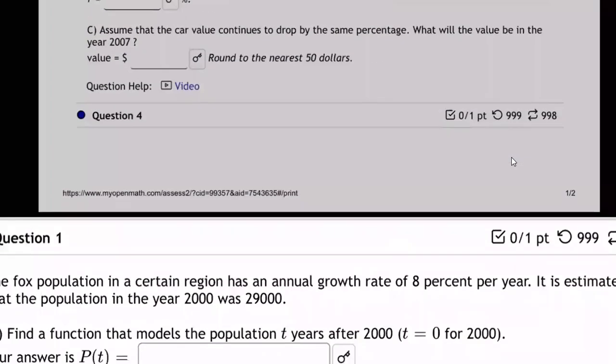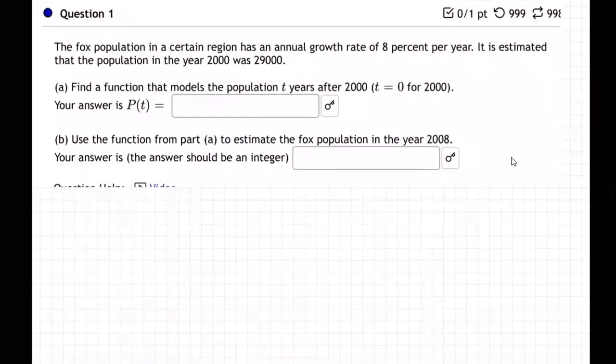Okay, so let me come on down here. Here we go. Here's the question. The fox population in a certain region has an annual growth rate of 8% per year. So that means every year the fox population goes up by 8% per year. It is estimated that the population in the year 2000 was 29,000, at least is the number I have, 29,000 foxes in this certain region.